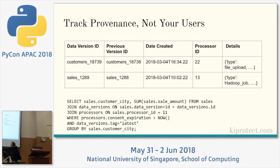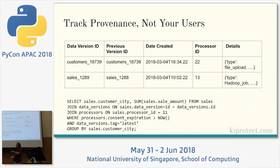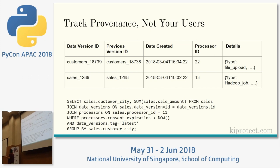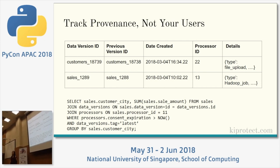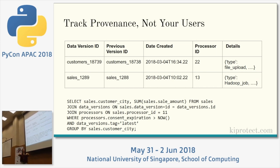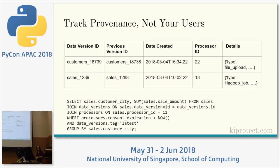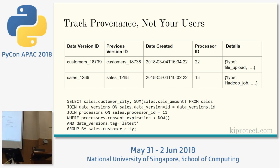Once we have consent, the next thing we need to worry about is actually tracking it. Rather than tracking our users across the internet, we need to worry about tracking how we're using their data internally. Data provenance is this open computer science problem that people have been working on for decades. I've done some research and writing on this if you're interested.